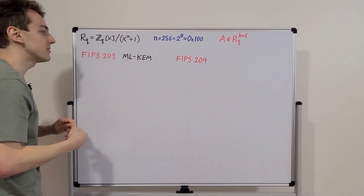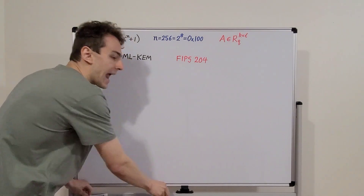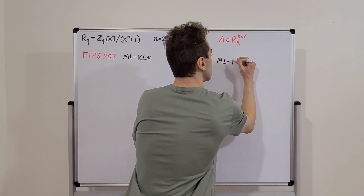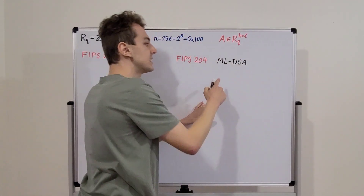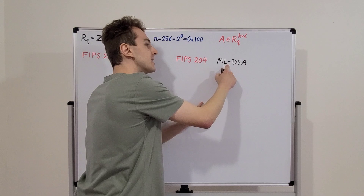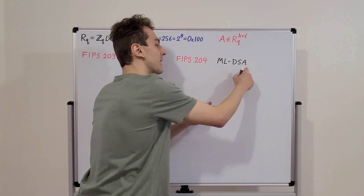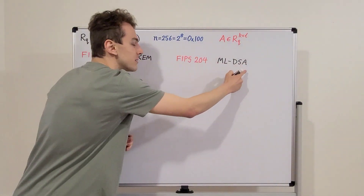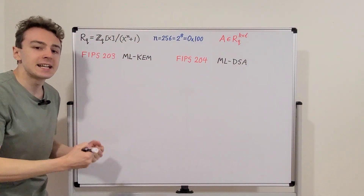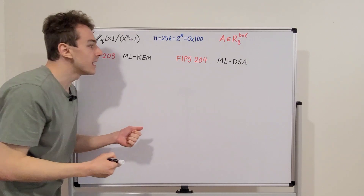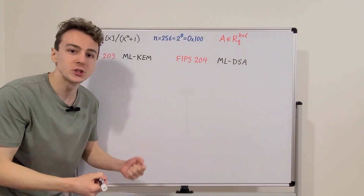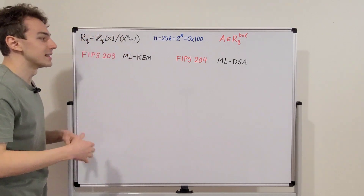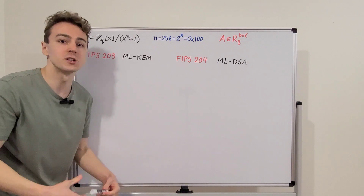We're also using ML-DSA. FIPS 204 specifies how to implement ML-DSA — module lattice based digital signature algorithm. And as the name suggests, this is a digital signature algorithm. Both of these algorithms are module lattice based algorithms, and that is the reason they are classified as PQC, or post-quantum cryptography. We could also call them quantum safe or quantum resistant.